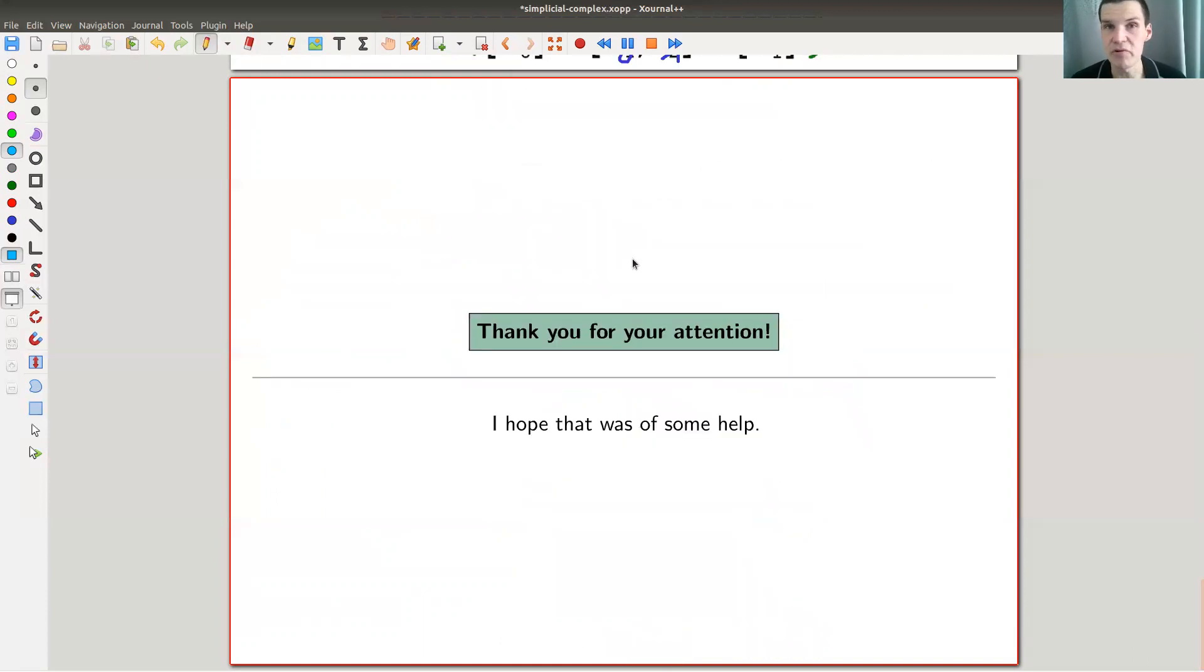Anyway, so let me wrap up. Simplicial complexes are things that are built out of triangles. You can either think of them as being abstract pieces, or you can think of them as being concrete triangle things using a certain number of rules. And then you might want to play some topology tricks on your simplicial complexes. Anyway, I hope you enjoyed the video, and I also hope to see you next time.